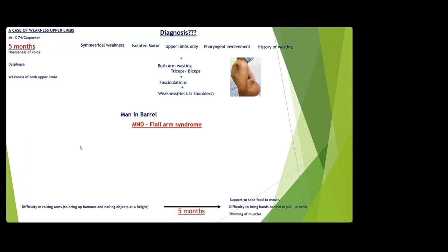Do you see motor neuron disease very often? Yes, there are plenty of cases seen. Different varieties encountered include flail arm and others. Thank you.